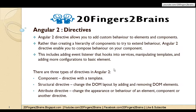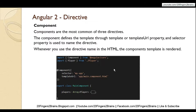We will see each of these directives one by one. The first type is component. Components are the most common of the three directives. The component defines the template through the template or templateURL property, and the selector property is used to name the directive. Whenever you use the directive name in the HTML, the component's template is rendered. Here we have a simple component named main component with a decorator specifying the templateURL and selector properties.